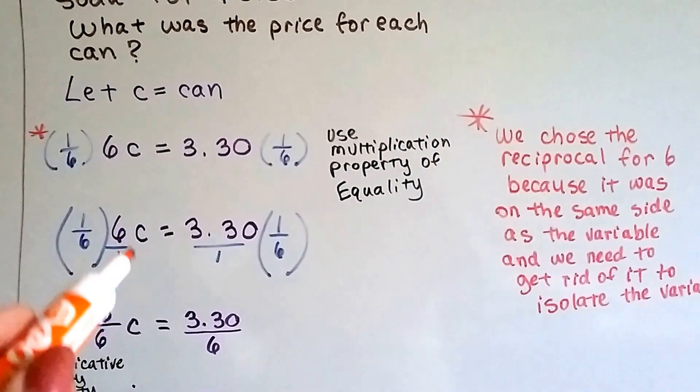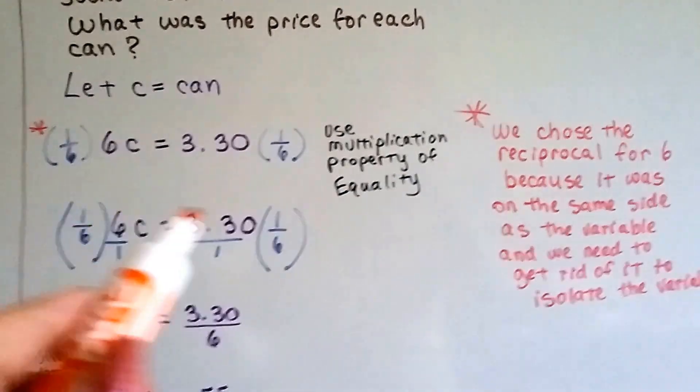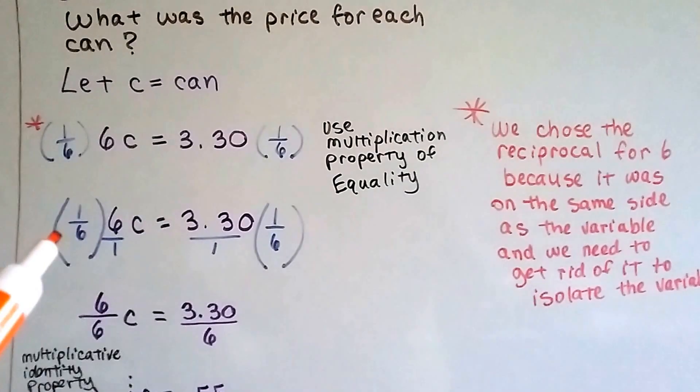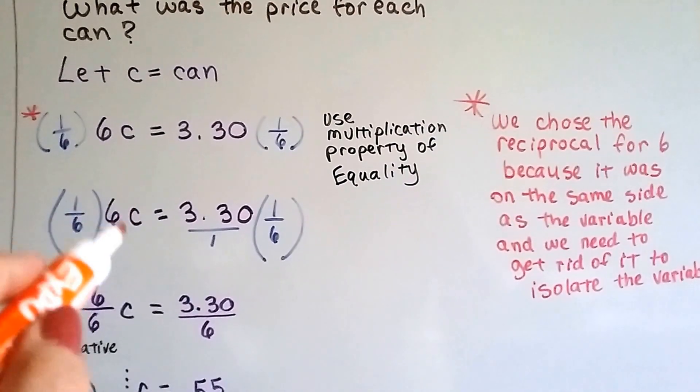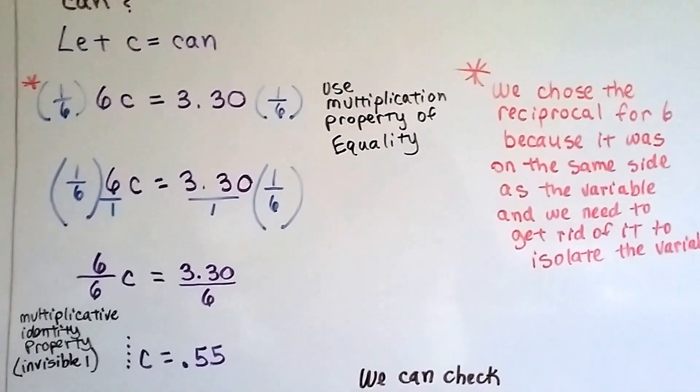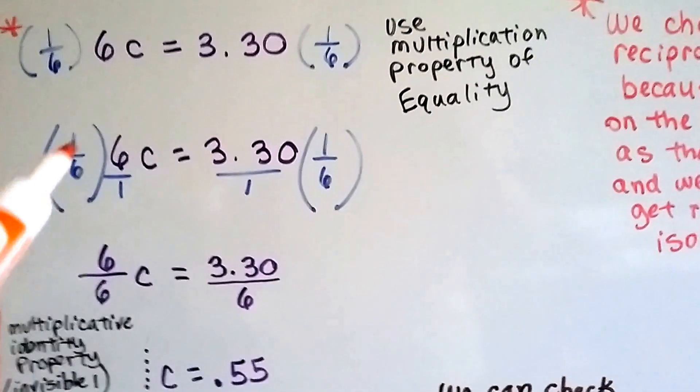The six over one, the reciprocal is one-sixth. And multiplying both sides by that one-sixth is going to help us get rid of this six on this side so the C is isolated and it's by itself and we can find out what it equals.